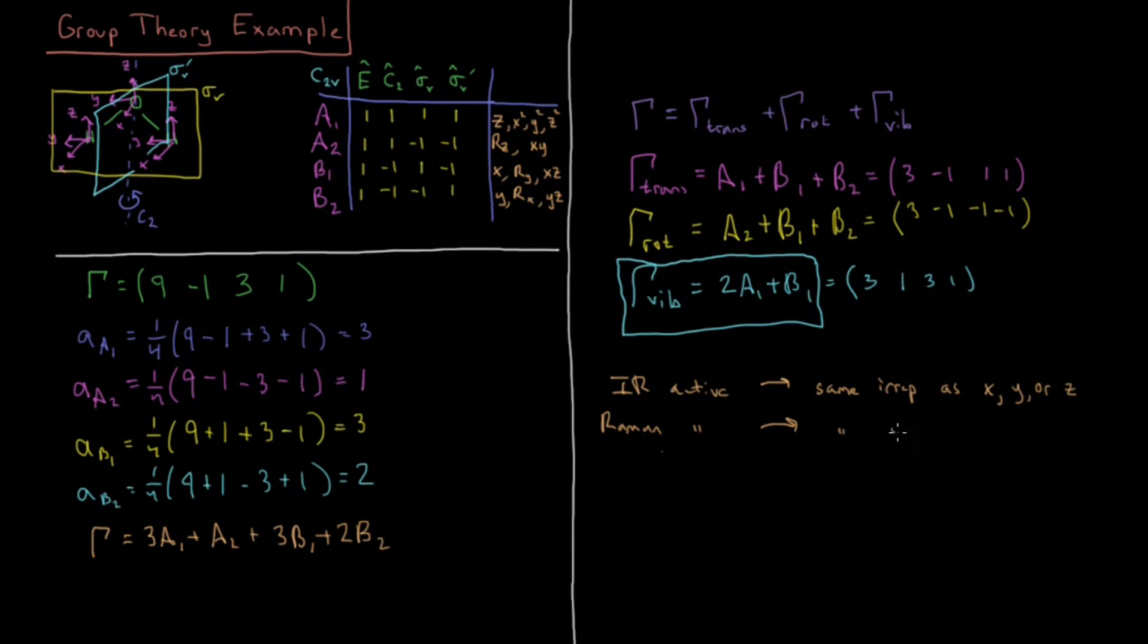And as far as Raman activity, those must have the same IR rep as the product cases. So this is X squared, Y squared, Z squared, XZ, YZ, or XY. So in this case, you'll notice X squared, Y squared, Z squared in A1, XY in A2, XZ in B1, and YZ in B2. So there's at least one in every single column here for the C2V point group. So every vibration in C2V, no matter what IR rep it is, is going to have to be Raman active because it's going to follow one of these particular products there.